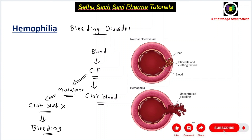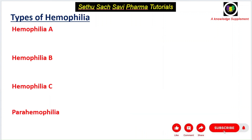Looking at this diagram: whenever a rupture or tear occurs, platelets and clotting factors come in and help to clot the blood, so bleeding is stopped. But in a hemophilia patient, when a rupture occurs, since the clotting factors are defective, there will be uncontrolled bleeding. That bleeding disorder is called hemophilia.